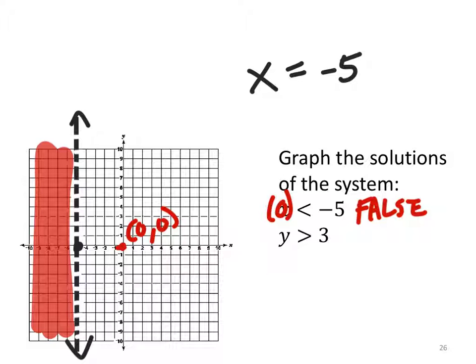Now let's look at y is equal to 3. y is equal to 3 right here. So that's going to be a horizontal line, because y is 3 all on that line. And we can make that a dashed line as well, because it's not equal to.